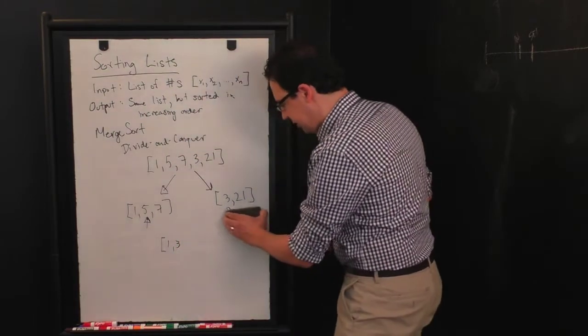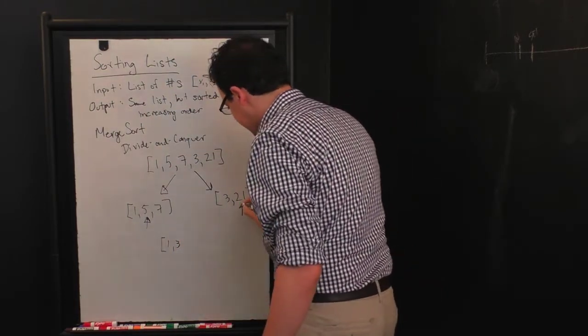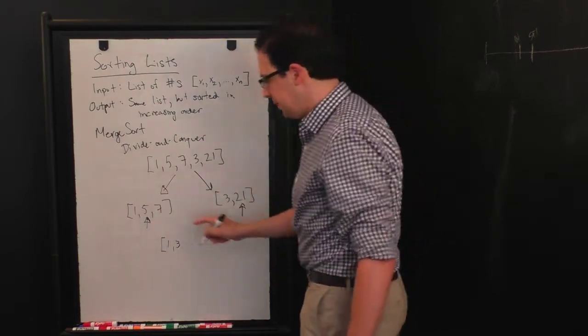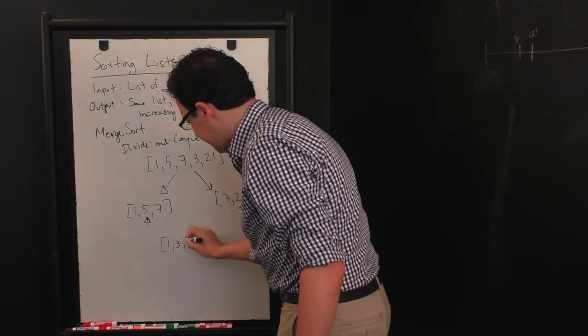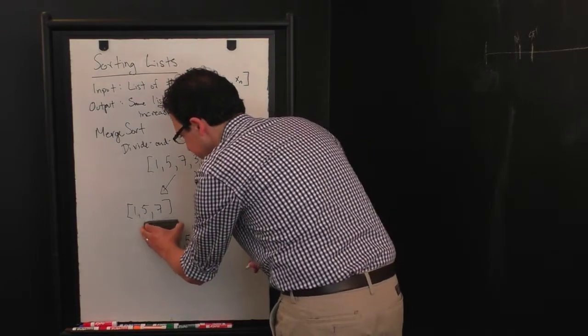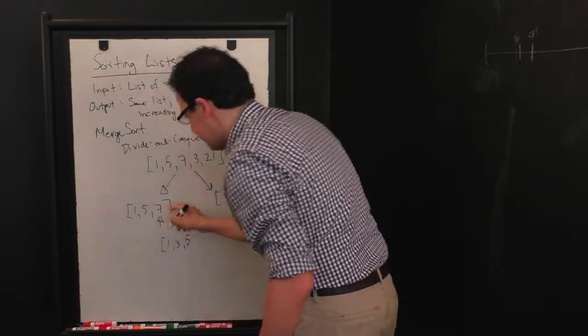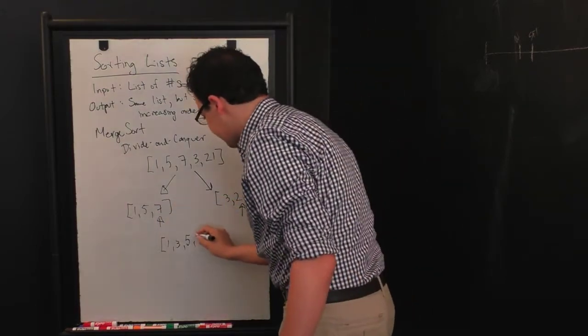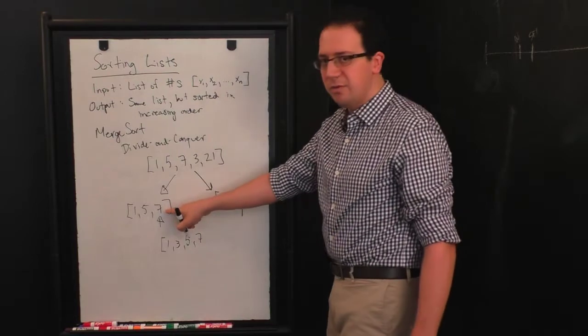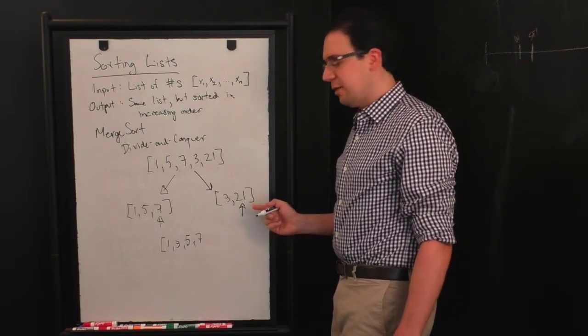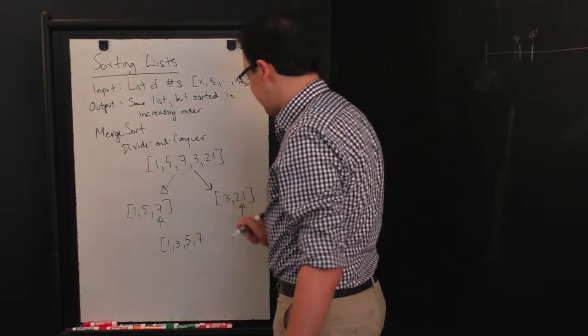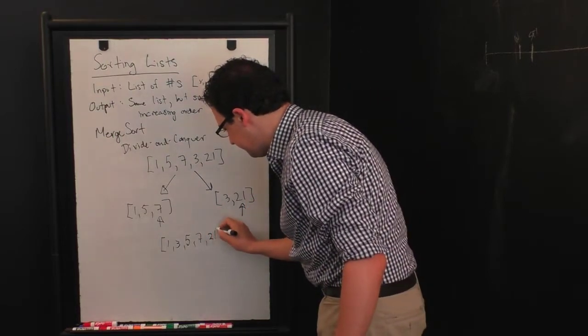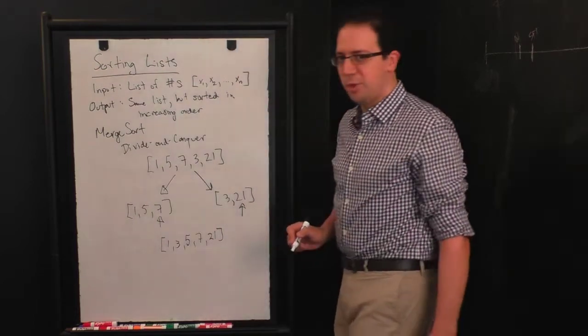I advance the pointer here. And this, what this is pointing at, is now bigger than this one. So I go back to this list. So now I take the five, I put the five here, I advance this pointer, I see, is seven less than 21? Yes, it is. So I put the seven here. And when you've reached the end of a list, you also go to the other list, if there's anything left. So I've reached the end of this list. So I now go back over here, I put in 21. And that's my merge.